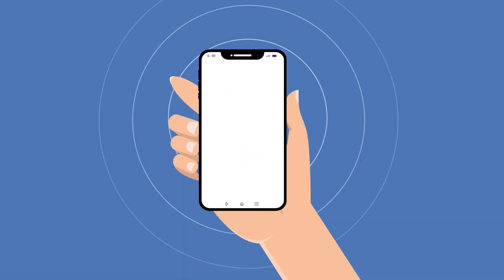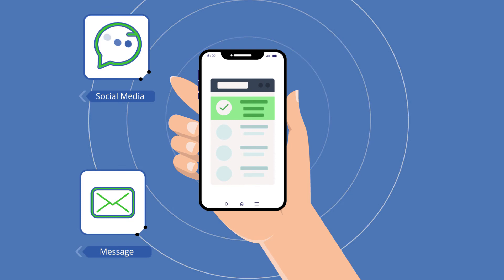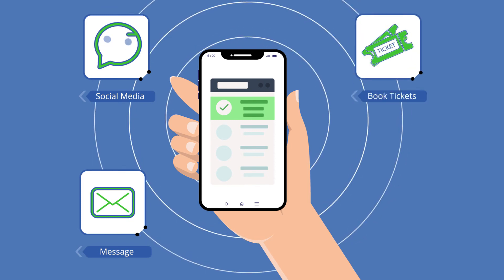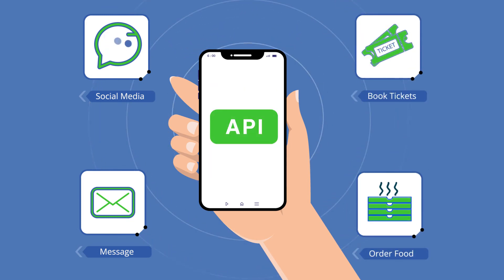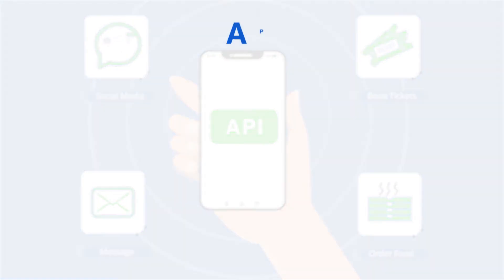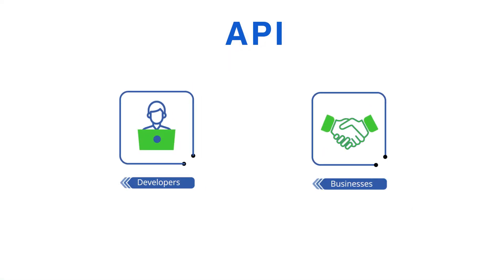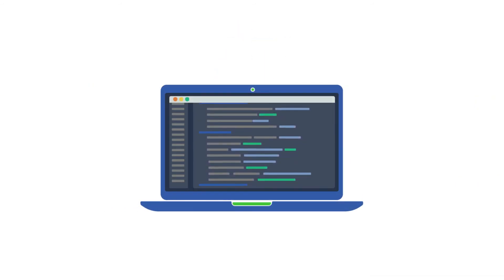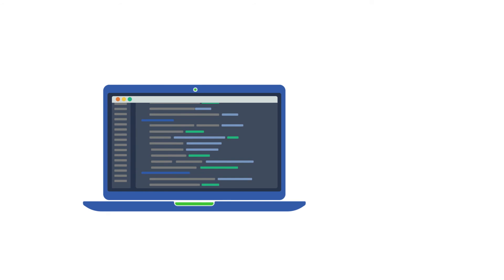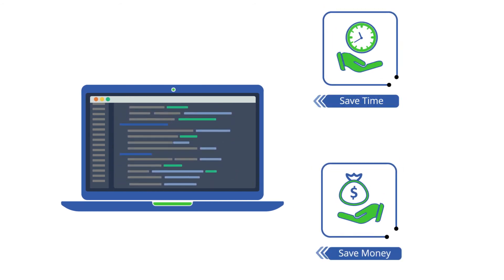Every time you use a social media app, send an instant message, book tickets online, or order food, you're using an API. APIs are also important for developers and businesses. Instead of building code from scratch, developers can use APIs to save time and, as a result, money for the business.